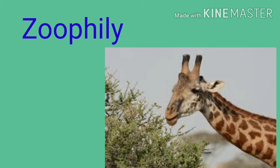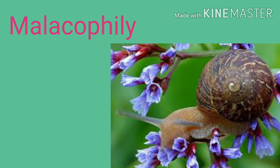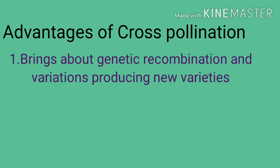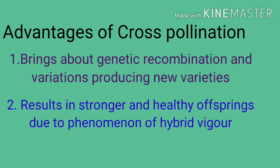Zoophily — pollination by any type of animal; and malacophily — pollination by snails. Advantages of cross-pollination: it brings about genetic recombination and variations, producing new varieties, and results in stronger and healthy offsprings due to the phenomenon of hybrid vigour.